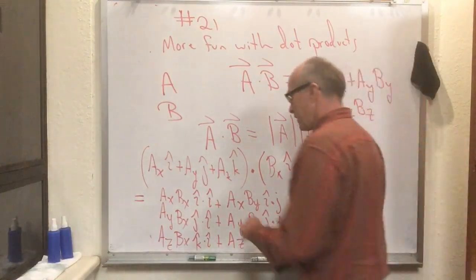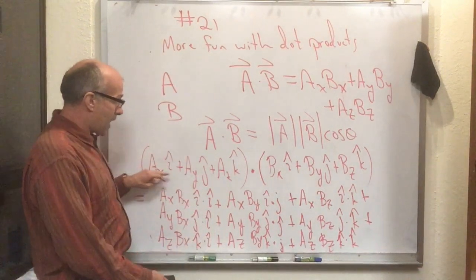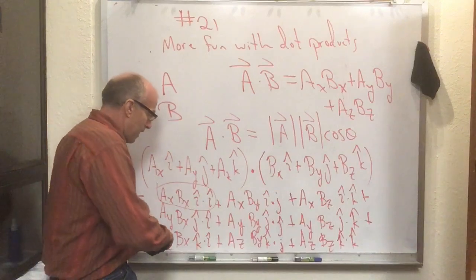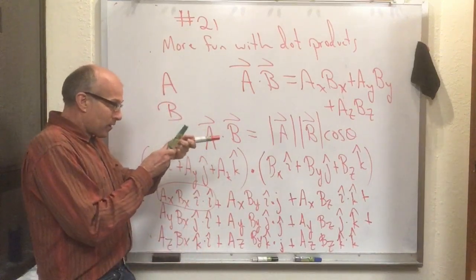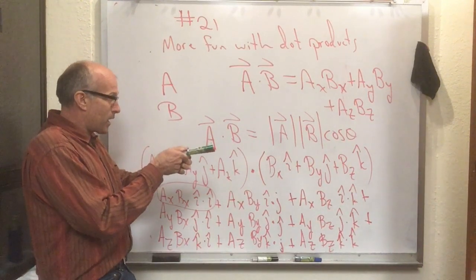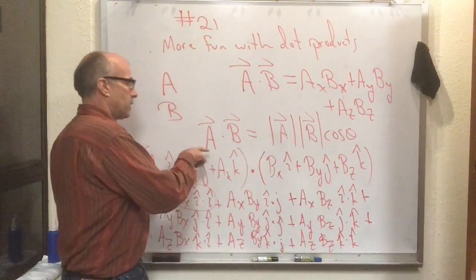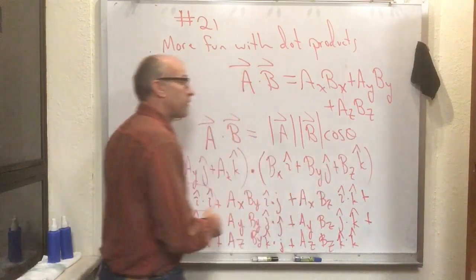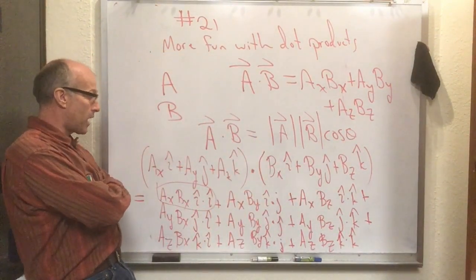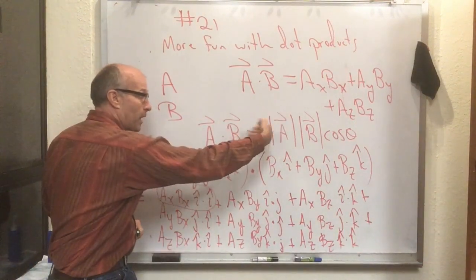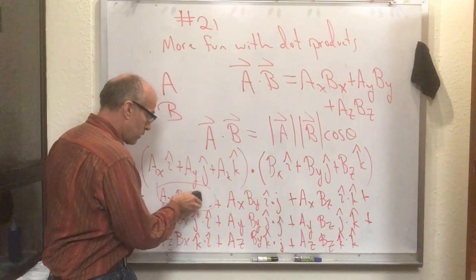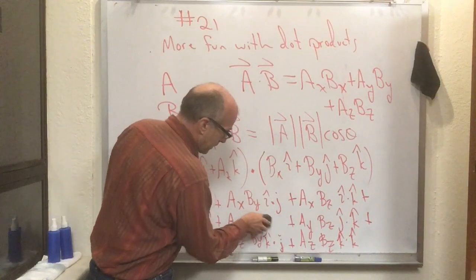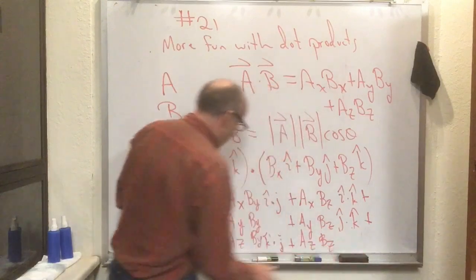Some of these are actually pretty easy. The ax·bx term has i-hat dot i-hat in it. Now i-hat dot i-hat is a unit vector dotted into a unit vector pointing the same way. If this formula is true, that's the length of the first unit vector — which is one — times the length of the second — which is one — times cosine of zero degrees, which is one. So i-hat dot i-hat equals one. Similarly, j-hat dot j-hat equals one, and k-hat dot k-hat equals one.